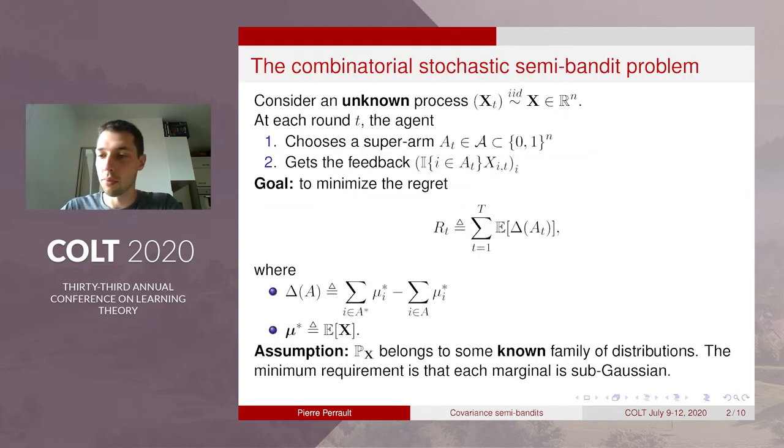So we consider an unknown process of the random vector XT with IID in Rn and at each run the agent need to choose a super-arm AT also called action that belongs to an action set capital A and gets the feedback, the semi-bandit feedback corresponding to that action.